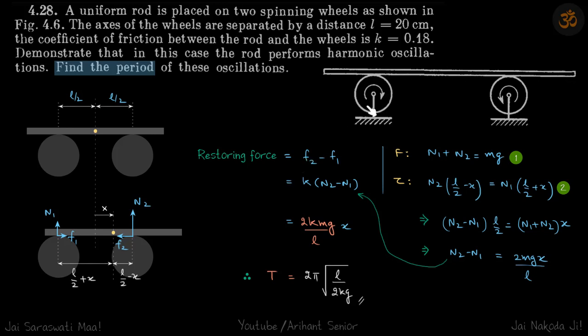We have a rod that is placed on two cylinders that are rotating in opposite directions. The rod is in equilibrium right now, and if it is shifted a little, we need to find the time period of the oscillations.